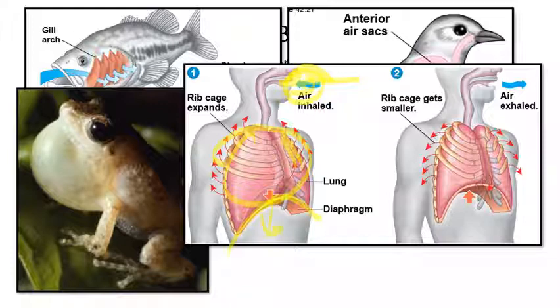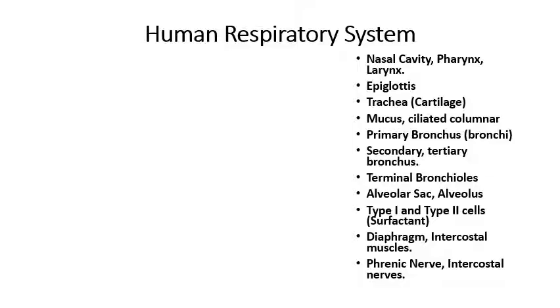Humans are negative pressure breathers; frogs are positive pressure breathers. Let's look at the various parts of the human respiratory system.